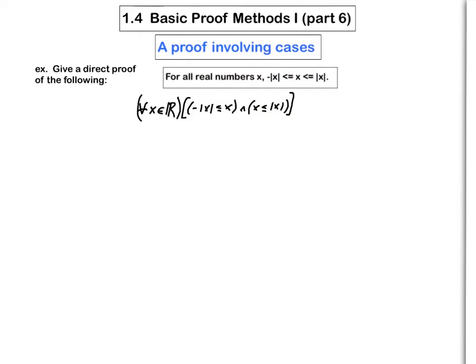What should be the beginning of the proof? It's universally quantified, so as usual you have to give yourself a completely generic x. The first sentence should be: let x be a real number. This is not conditional, so the very last sentence should be something like: therefore, minus absolute x is less than or equal to x, and x is less than or equal to absolute x.